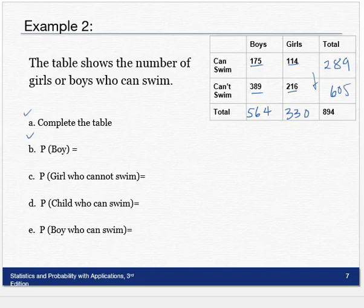Now, part B: The probability of selecting a boy. Well, how many of them are boys? It's just 564 out of 894. And make it a decimal, 0.631.